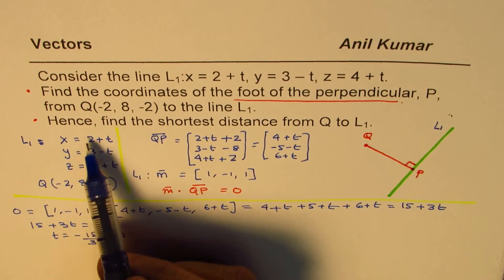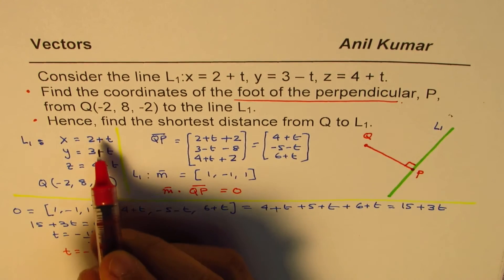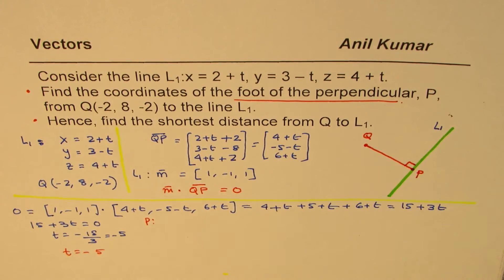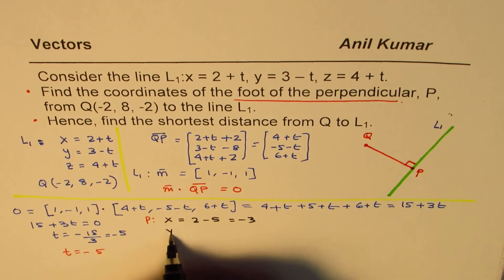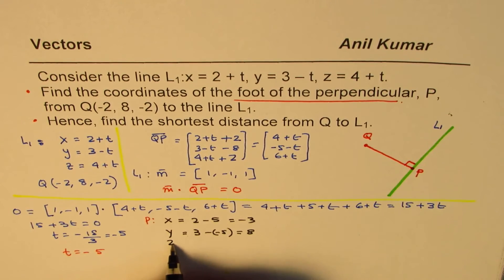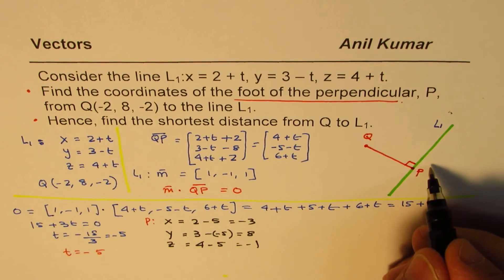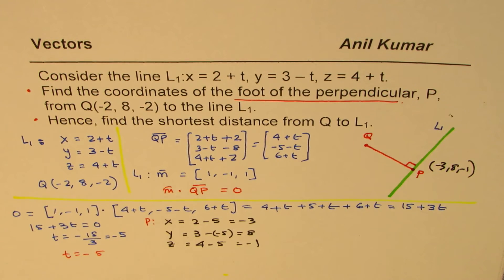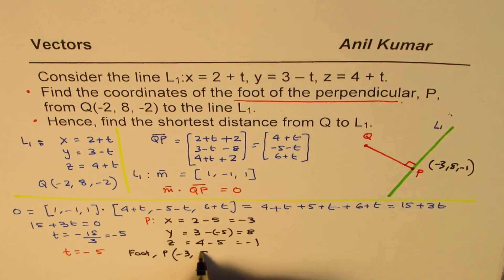Now, once we know t is -5, we can find the coordinates of point P. We'll substitute this value here and find the coordinates of point P. So for P, we'll substitute -5 in the equation. So the x-coordinate will be 2 minus 5, which is -3. The y-coordinate will be 3 minus (-5), and that is 8. And the z-coordinate will be 4 minus 5, that is -1. So we get the coordinate points for P, which are (-3, 8, -1). So that is the coordinate point for P, the foot of the perpendicular.